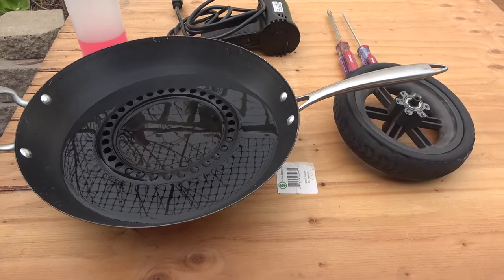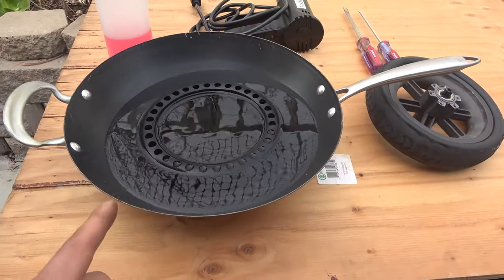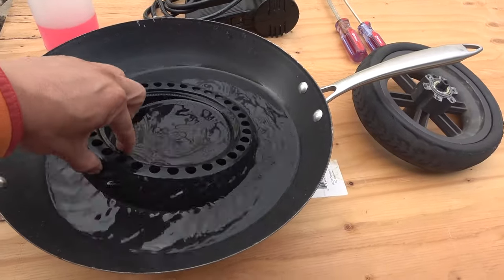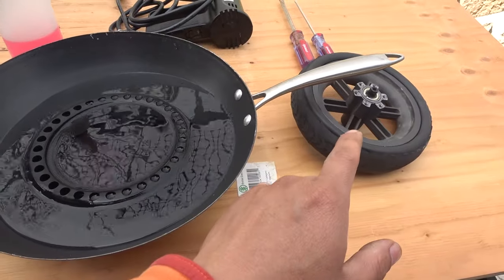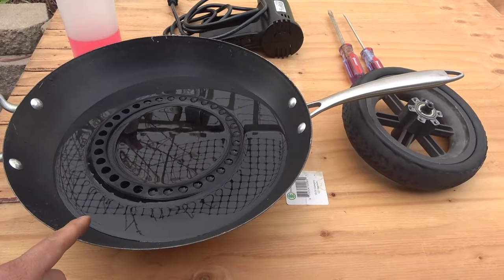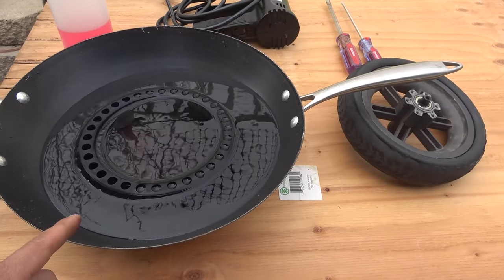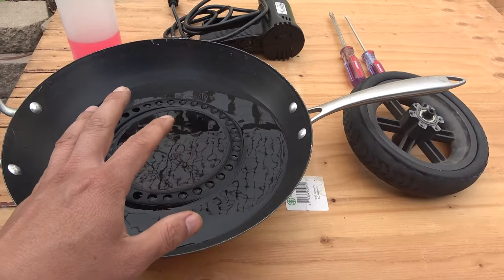So first thing I gotta do is to heat up the new tire and I'm gonna use hot water, actually boiling water, and dump the tire into it to heat it up and that will make it easier to put on the rim. This pan is what my wife used to fry rice and whatnot. She's not home right now so hopefully I can get everything done before she gets home.